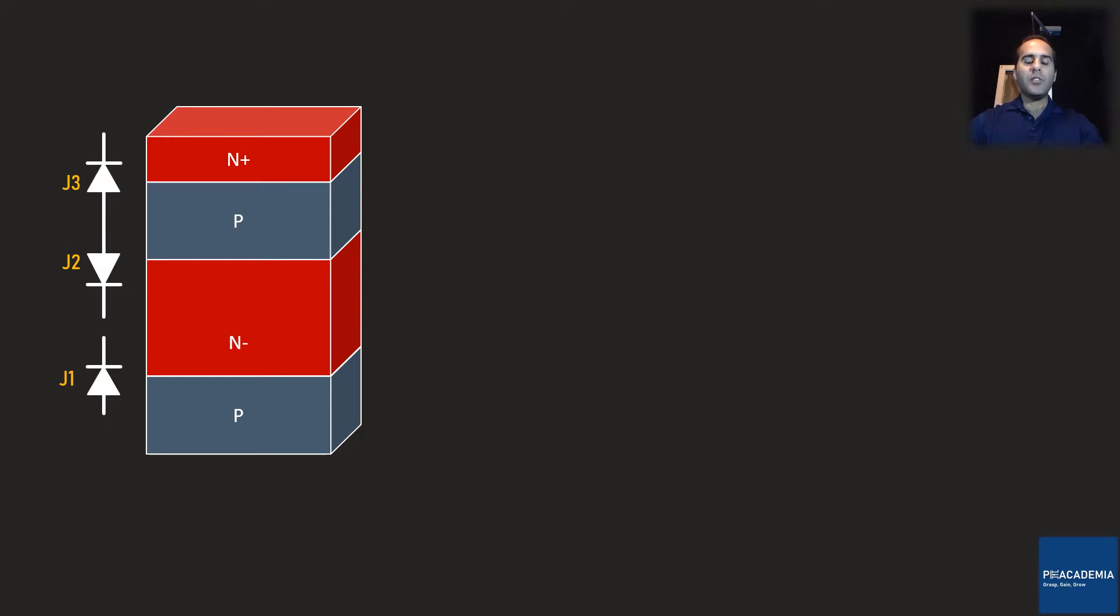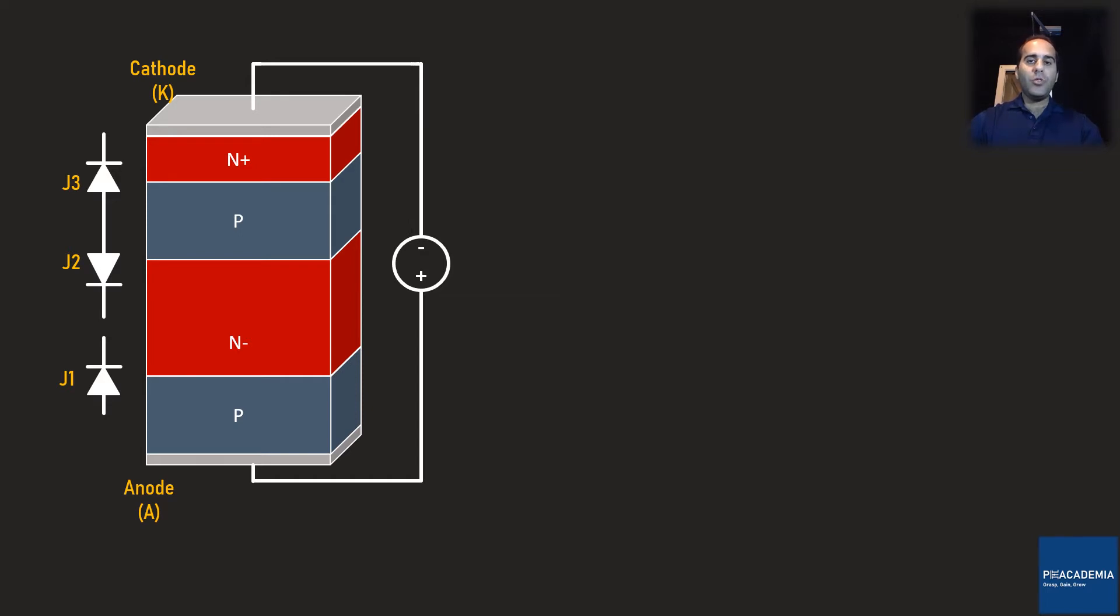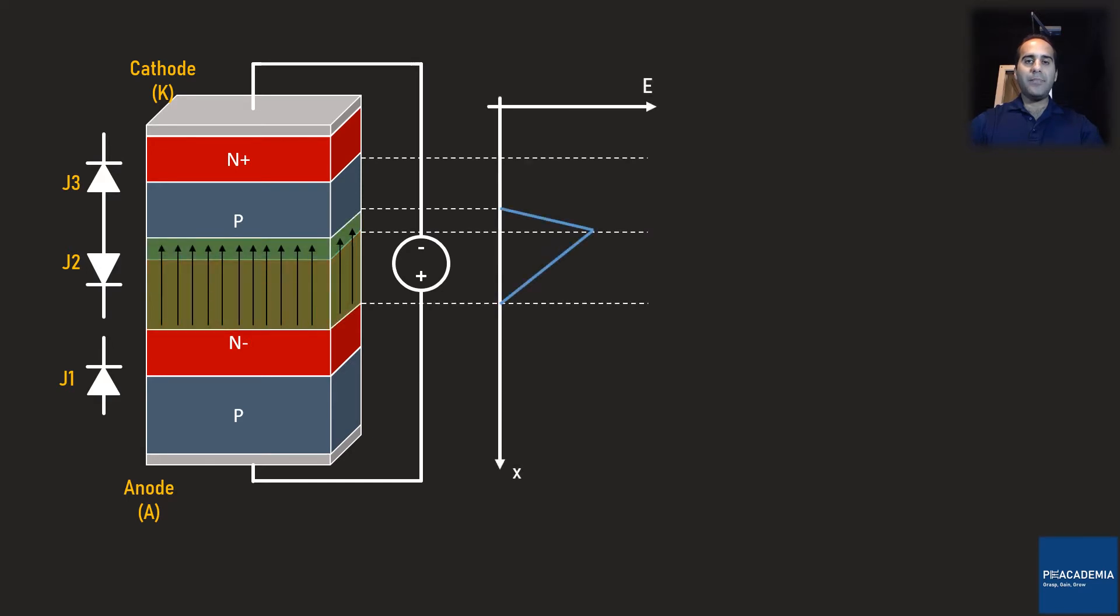The bottom end of the device is called anode and the upper end is called cathode. If I connect a voltage source with its positive connector to anode and negative to cathode, the junctions J1 and J3 are forward biased and J2 is reverse biased. As a result, no current will flow through the device. Under these conditions, the internal electric field of the device looks like this. Around the junction J2, there is a triangular electric field that blocks the current flow.